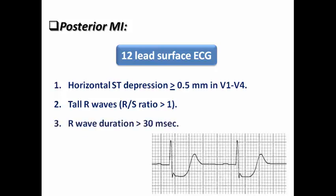The third criterion is that the R wave duration is more than 30 ms, equivalent to a pathological Q wave as we will discuss later. The fourth criterion is that the T wave is mostly upright. So the question is: why do these unique ECG features occur in posterior MI? Why don't we see ST elevation as in most cases of STEMI?